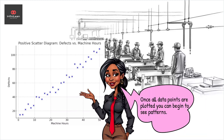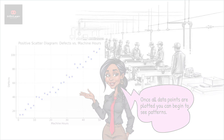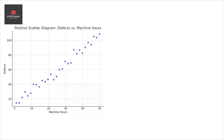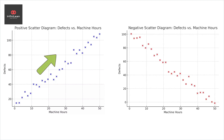Once all data points are plotted, you can begin to see patterns. If the points on the graph tend to move upward from left to right, this indicates a positive correlation — meaning as one variable increases, so does the other.